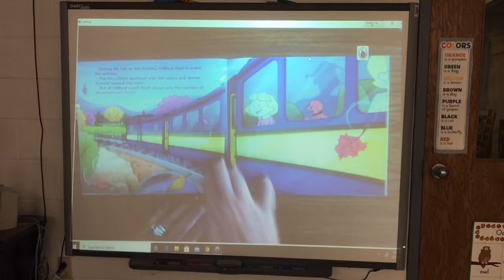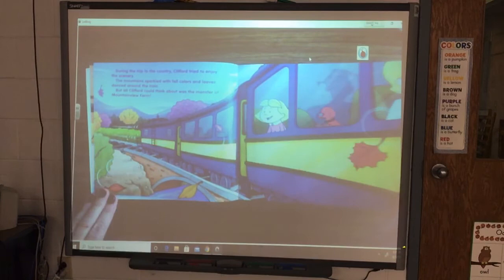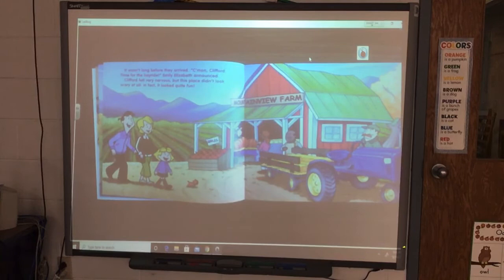During the trip to the country, Clifford tried to enjoy the scenery. The mountains sparkled with fall colors and leaves danced around the train. But all Clifford could think about was the monster at Mountain View Farm. It wasn't long before they arrived. Come on Clifford, time for the hayride, Emily Elizabeth announced.